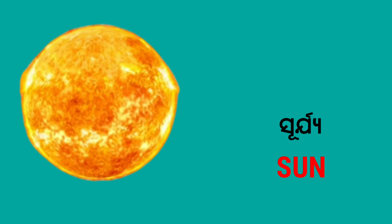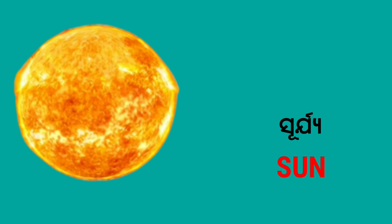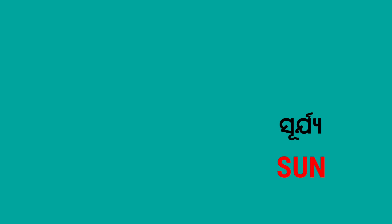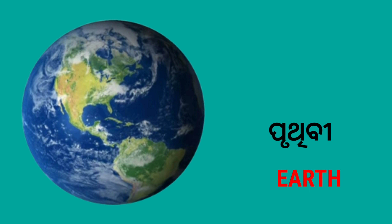Surjya — in English we say Sun. Pruthibi — in English we say Earth.